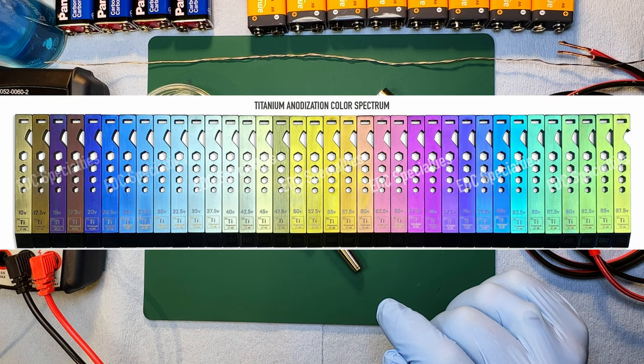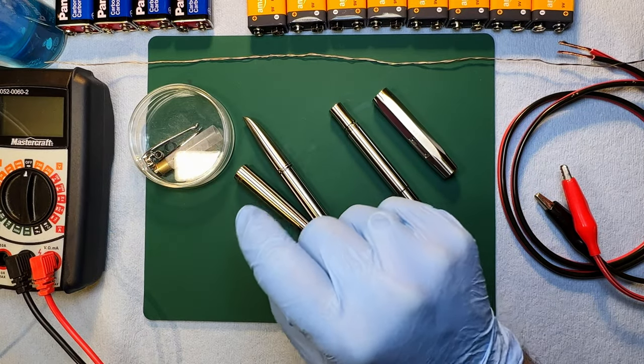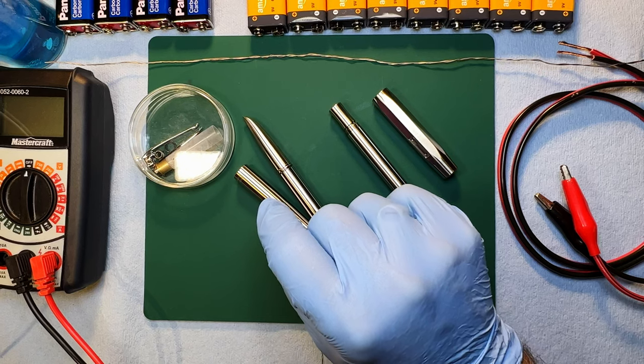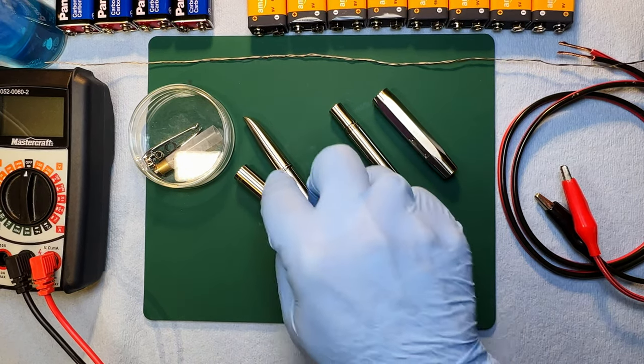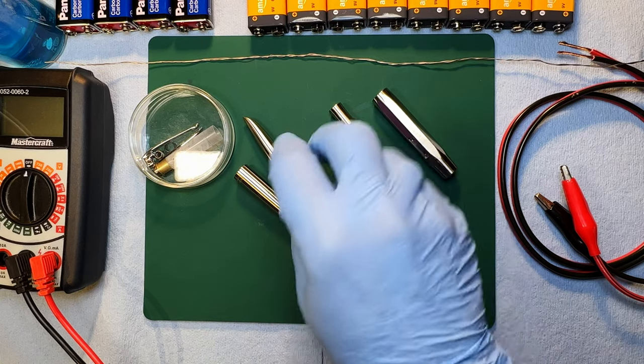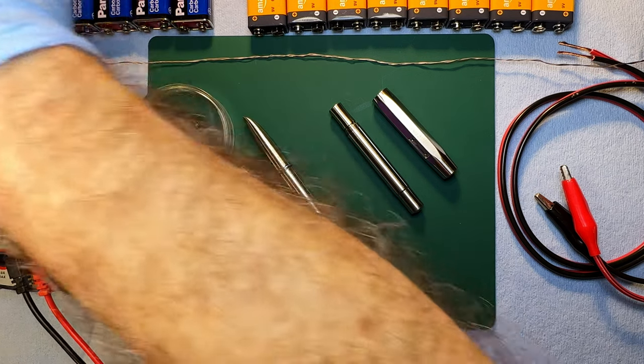Here's a color chart that shows the various colors created depending on the voltage applied. Then I needed some nitrile gloves, not because the solution I'm putting them in is caustic, but because I don't want to transfer the oils from my fingers onto the titanium because that'll change the coloration, the oxidation on there.